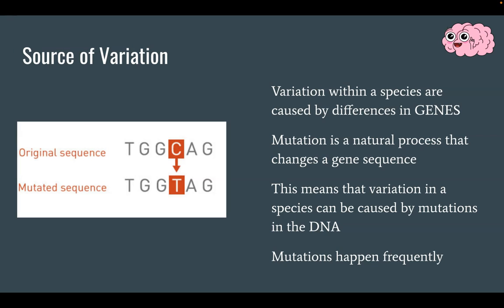Finally, mutations happen frequently. During reproduction, mutations happen fairly regularly, and those mutations change genes, and changes in genes can alter traits. That is what causes the variety of traits in a population.